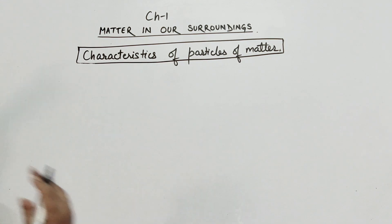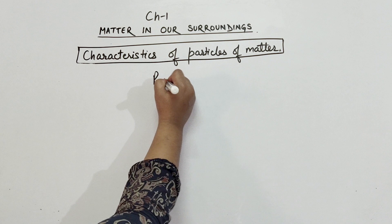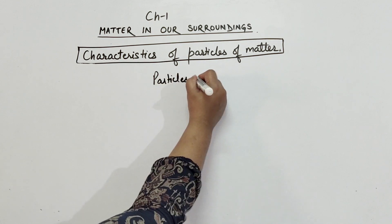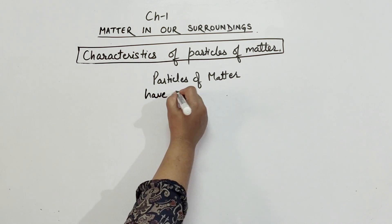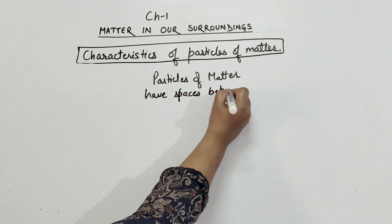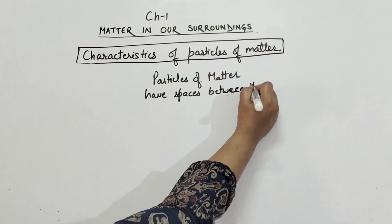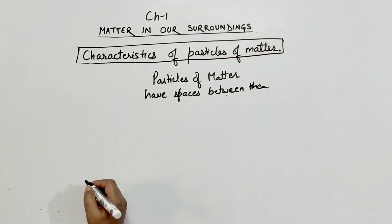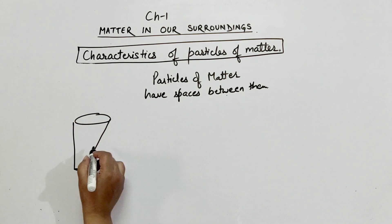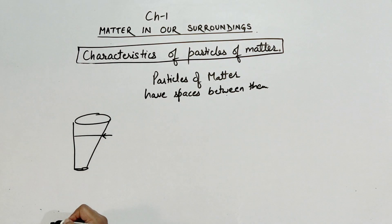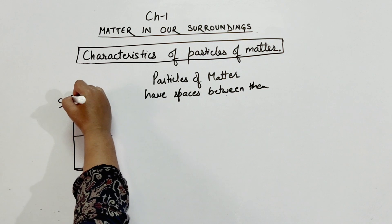Next property is particles of matter have spaces between them. Take a 100 ml beaker, fill it with water and mark the water level. Now dissolve a small amount of sugar.